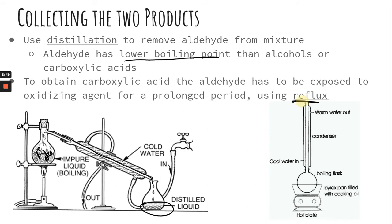To obtain the carboxylic acid, you expose the alcohol to the oxidizing agent like dichromate for a long period of time using reflux. In reflux, you have a condenser but the gas travels up, condenses, and comes right back down to be heated again, creating a loop until all the alcohol is converted to carboxylic acid.